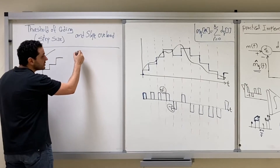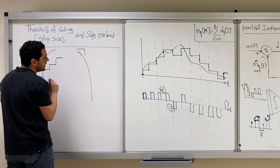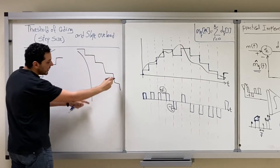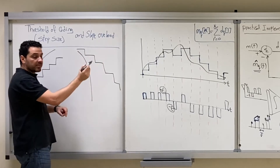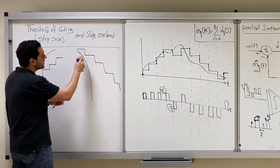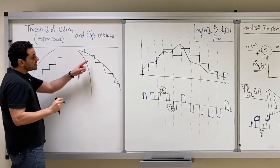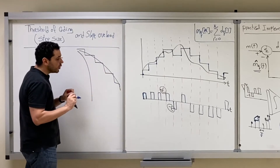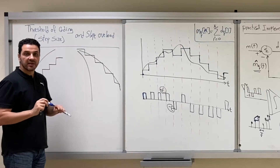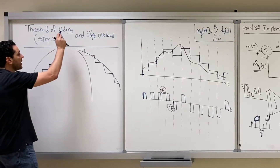The same thing happens when the signal goes down quickly. You take a sample and find you need to send the negative pulse, you send it and need to send another one, but you cannot catch the signal. There will be a big error between the original signal and the estimation. Even at the receiver when you try to smooth the signal, you will get a signal that's completely different from the original. This is because the step size is too small — not enough to catch the signal when its slope is highly positive or highly negative.